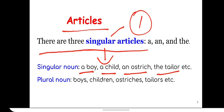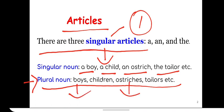And then the can be used with plural nouns, but a and an cannot be used before it. So we don't use a and an here. You can use the boys, the children, the ostriches.